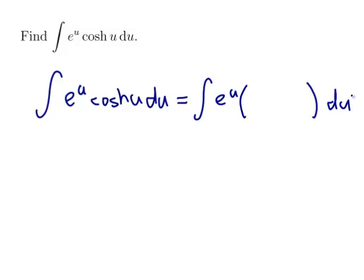Now cosh u would be e to the u and e to the minus u divided by 2. Now is it plus or minus? Well cosh is like cos in that it's even, and also it has the same answer of cos when you put 0 in. So if I put 0 into that, I should be getting 1, so I should put a plus there.